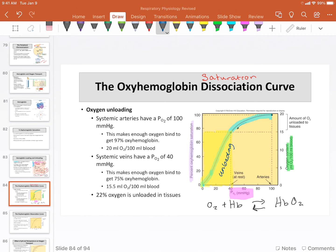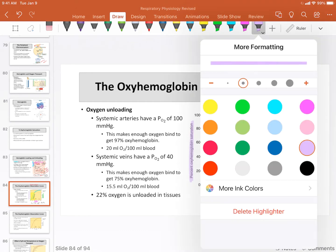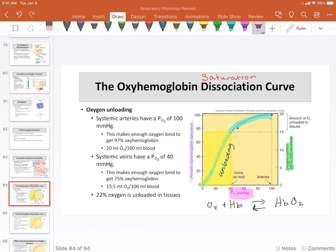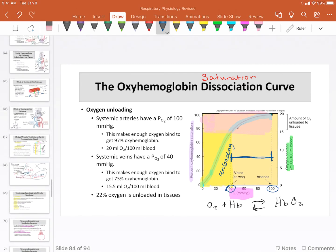It also gives us this curve here in this upper region. Notice that the curve is much less steep and so we actually have a fairly large range from here to here where blood oxygen levels or oxyhemoglobin levels are relatively stable and that's between the partial pressure of 40 and 100.